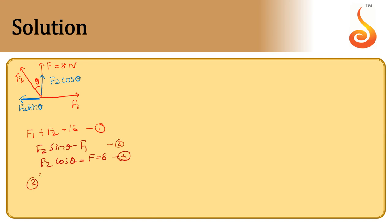2 square plus 3 square gives us F2 square times sin square theta plus cos square theta is equal to F1 square plus 64.